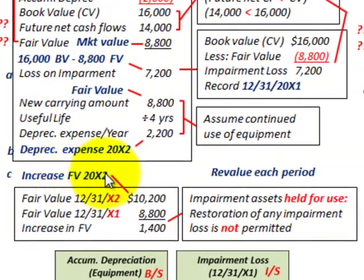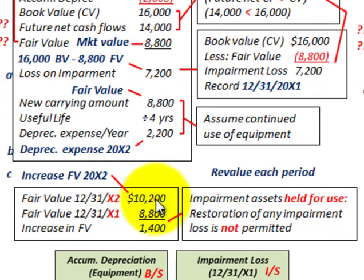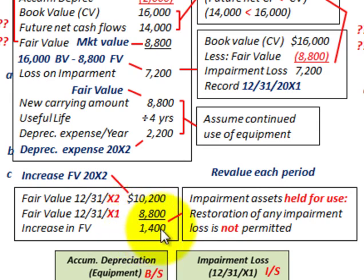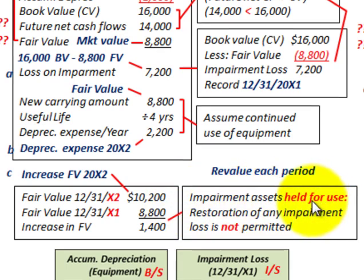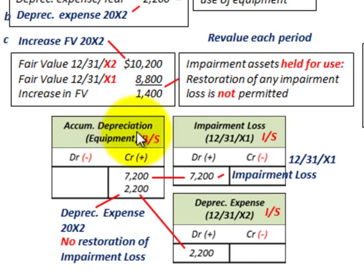Now let's look at the case where in 20X2 we reevaluate the fair value of this piece of equipment. At the end of 20X2, the fair value comes to $10,200, compared to $8,800 from 20X1 — an increase of $1,400. However, for impairment assets held for use, restoration of any impairment loss is not permitted. We cannot restore it on our balance sheet or income statement because this asset is held for use.